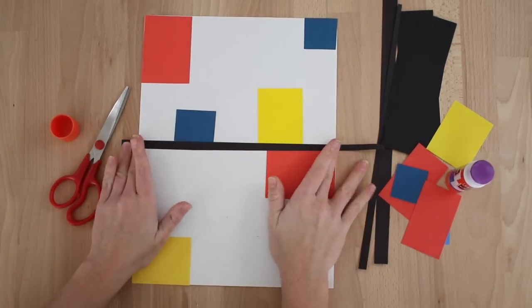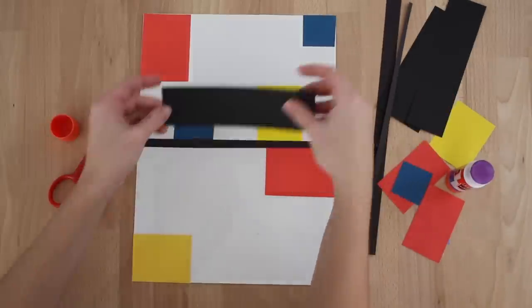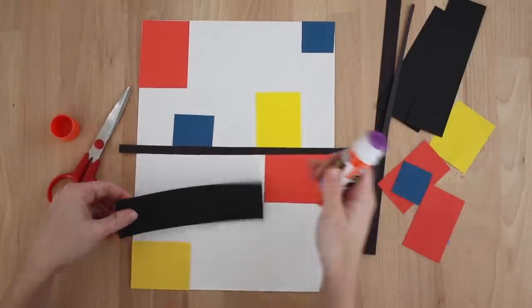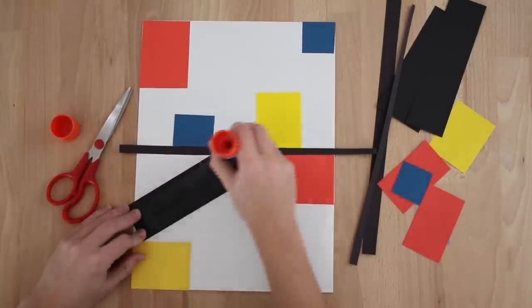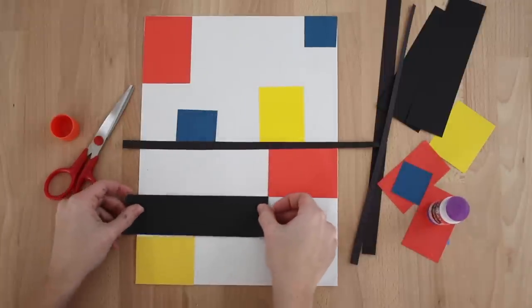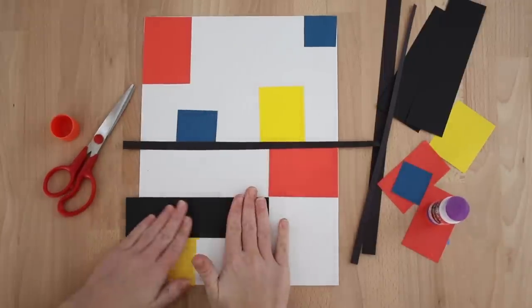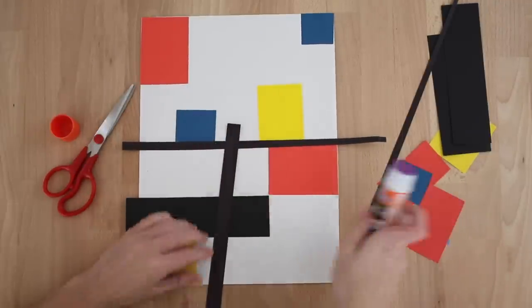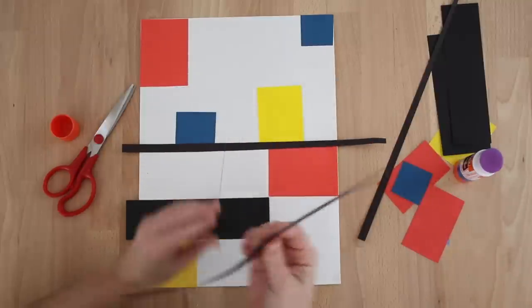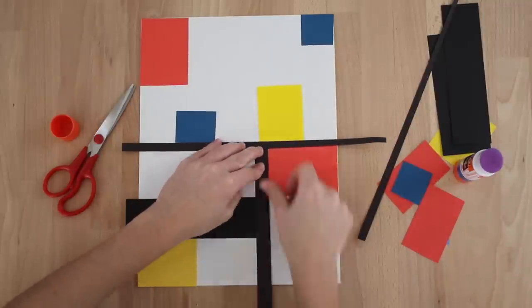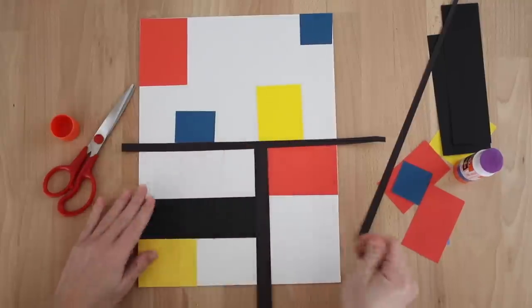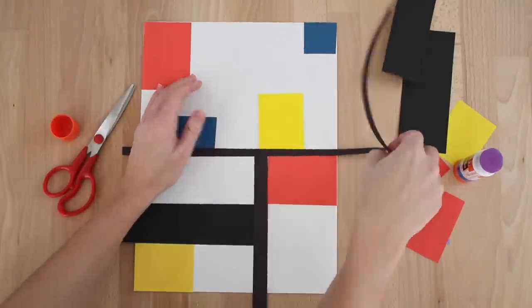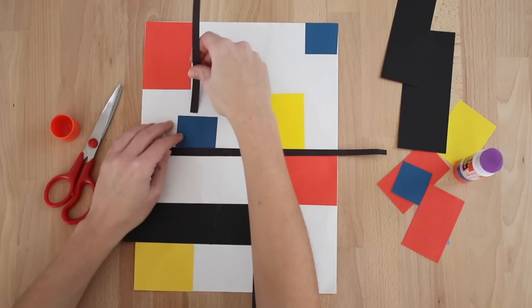I am gluing the black strips of paper to meet the edges of my squares and rectangles. It is okay if your black strips of paper are too long and go off the edge of the paper because you can use your scissors at the end to cut off the excess strip of paper and perhaps use the extra paper somewhere else. It is really up to you and however you would like your art piece to look.